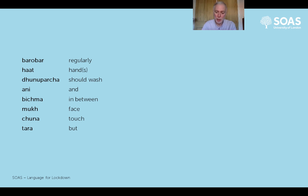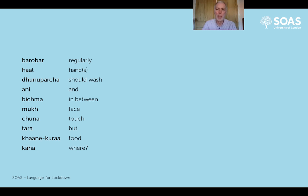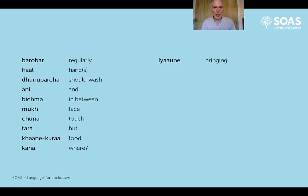'Tara' again means 'but'. 'Khanekura' literally means 'things to eat' - so foodstuffs, the noun. 'Kha' is another questioning word meaning 'where'. 'Lyaunu' means 'to bring something', so 'liaune' - 'where to bring from' is the question in the dialogue, meaning 'from where, bringing?'